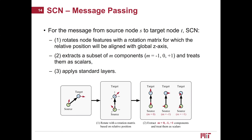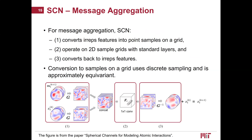For the message sent from source node to target node, SCN first rotates node features with a rotation matrix for which the relative position will be aligned with the global z-axis. Then it extracts a subset of N components in these irreps features and treats them as pure scalars. Instead of using equivariant operations, SCN applies standard layers. Although this breaks equivariance, they find that relaxing the equivariance constraint can improve performance on the OC20 dataset. For message aggregation, SCN converts irreps features into point samples on a grid, operates on 2D sample grids with standard layers, and converts back to irreps features. The conversion to samples on a grid uses discrete sampling and is therefore approximately equivariant.